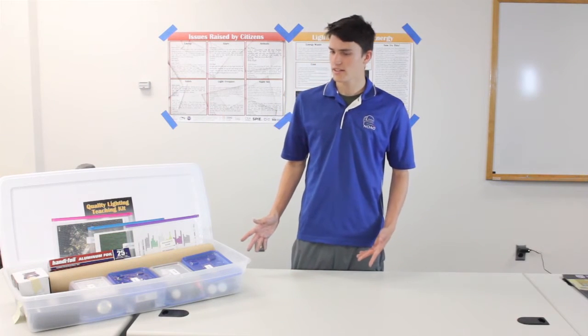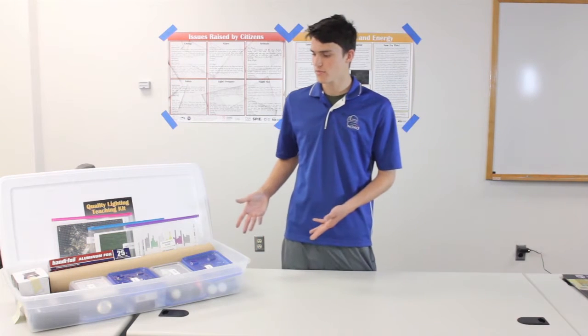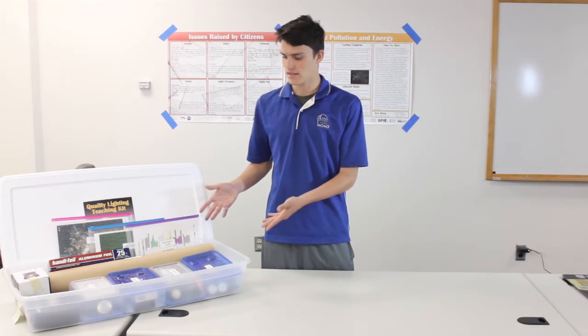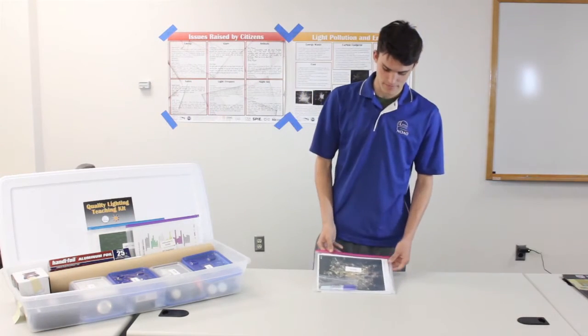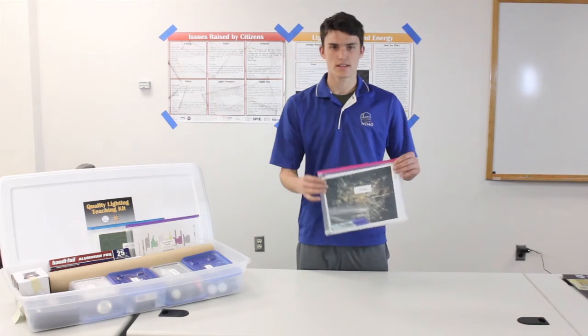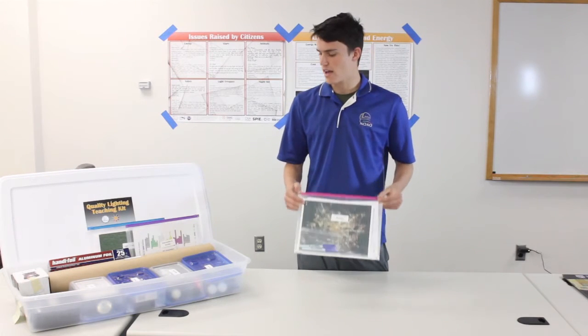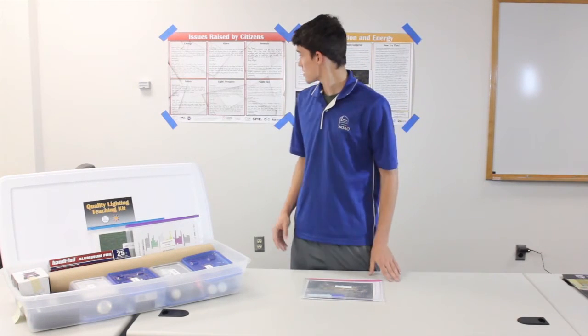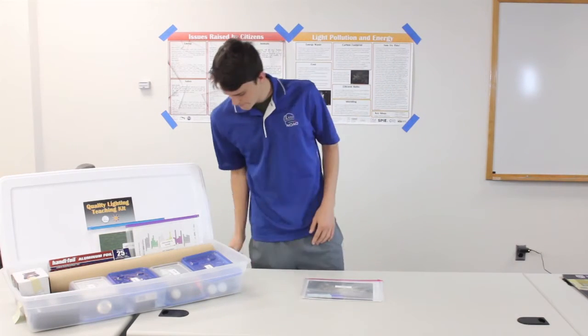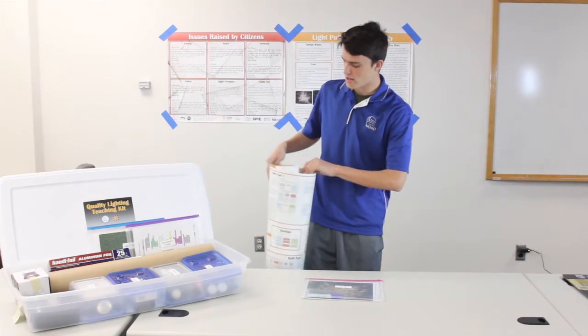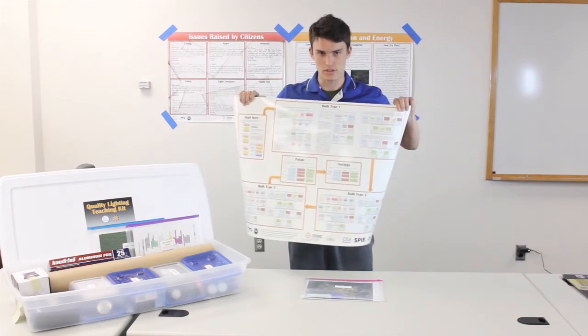When you get your quality light teaching kit, everything will be laid out in an easy to read manner. What we're looking at today is the energy activity. You just need the packet for the energy activity as well as three different posters: Issues raised by citizens, light pollution and energy, and the energy calculations map, which looks something like this.